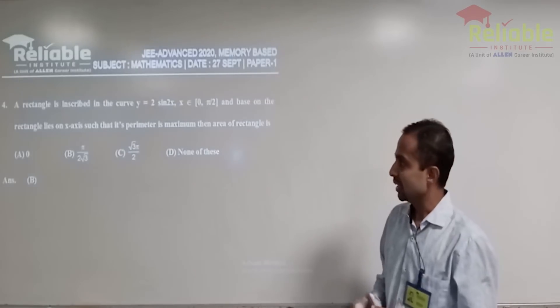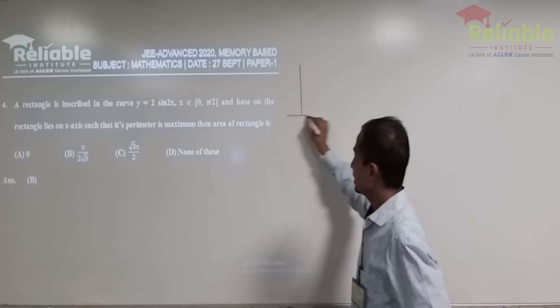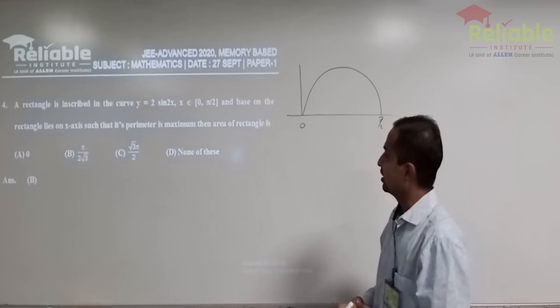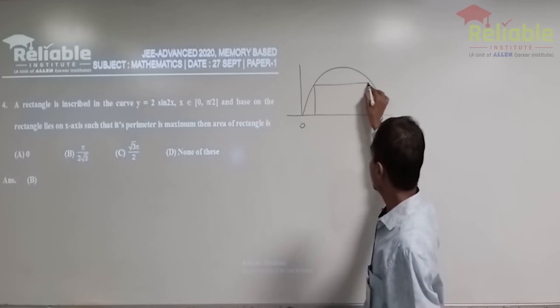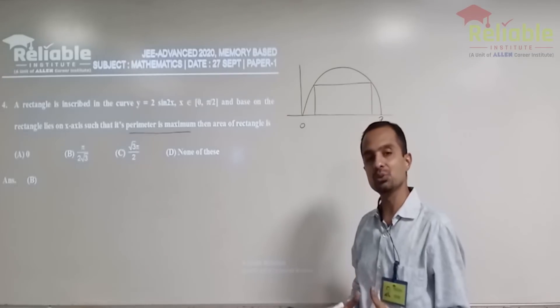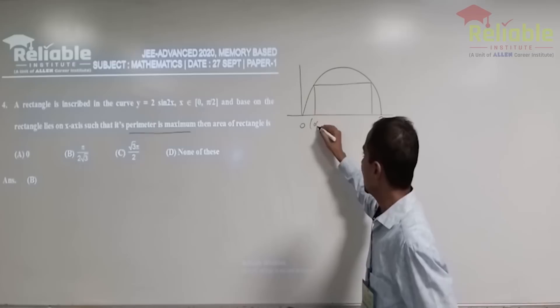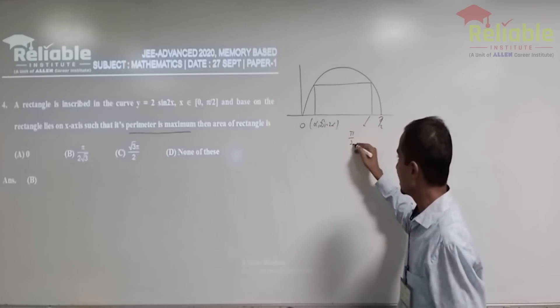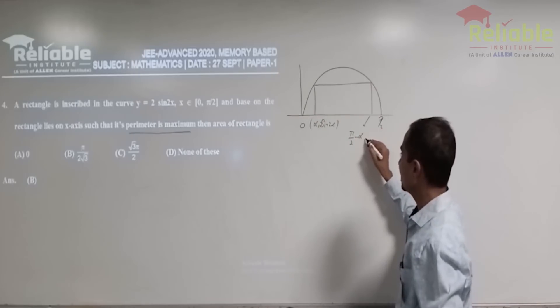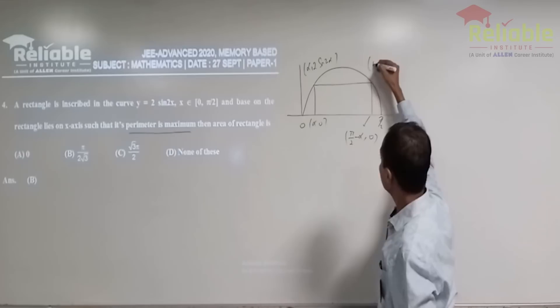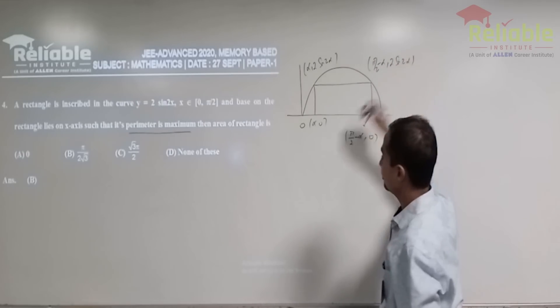Let's discuss question four of paper one. This question states that we have a curve essentially two sine two x between zero and pi by two, and then a rectangle is inscribed in this one. So, a rectangle is inscribed like this. We have to maximize the parameter and then we have to find at that situation, what would be the area. So, if this were to be alpha comma, of course, two sine two alpha. Now, the same value will come at pi by two minus alpha. Alpha distance, alpha by symmetry, you can see pi by two minus alpha. So, this is alpha comma zero. This is pi by two minus alpha comma zero. This point is alpha comma two sine two alpha. And, of course, this point is pi by two minus alpha two sine two alpha.